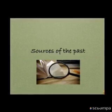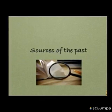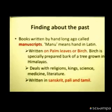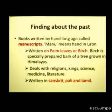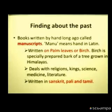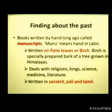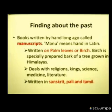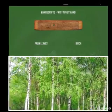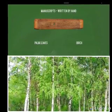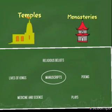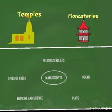Next we are going to see the sources of the past. What are the sources we find about the past? Books written by hand long ago are called manuscripts. Mono means hand in Latin. They were written on palm leaves or the bark of the birch tree. This is a manuscript on leaves. The birch tree is found in the Himalayan mountains, and manuscripts are preserved in temples and monasteries.